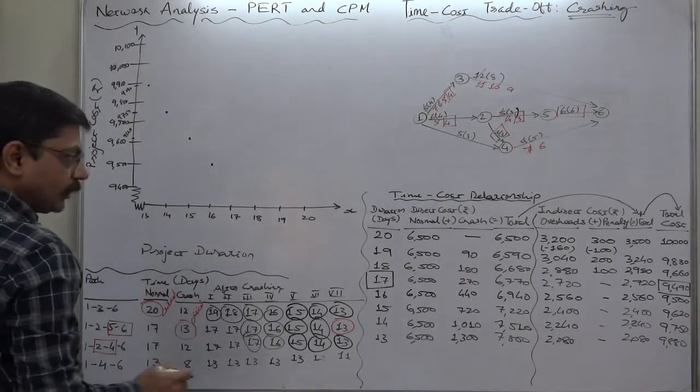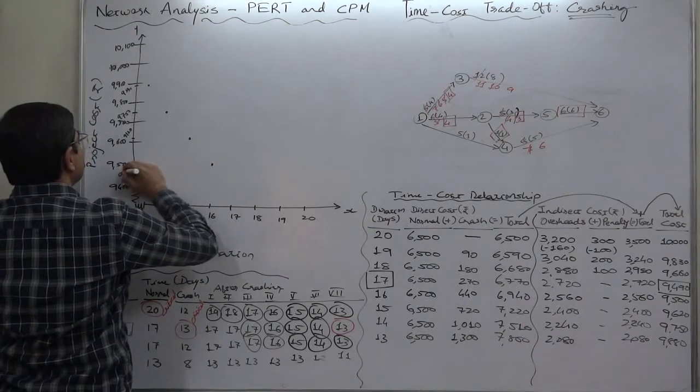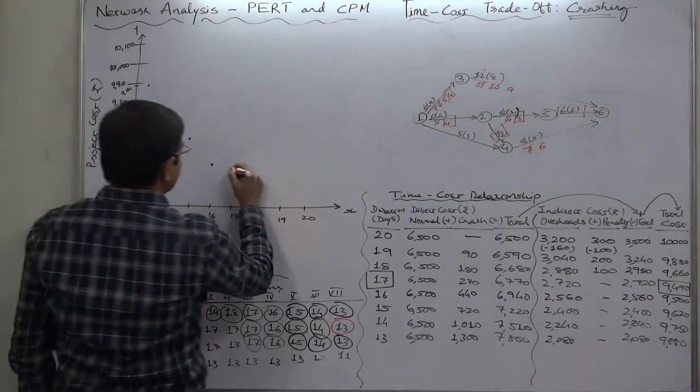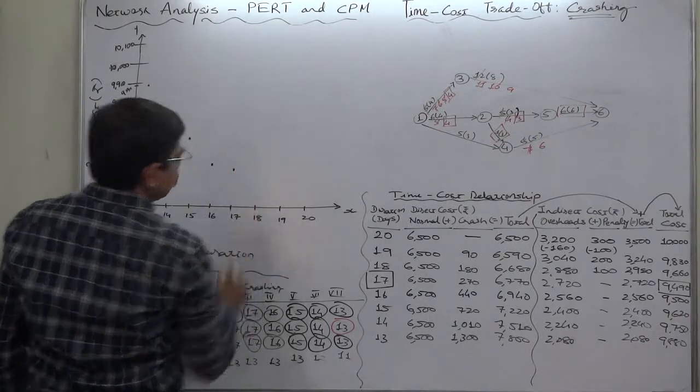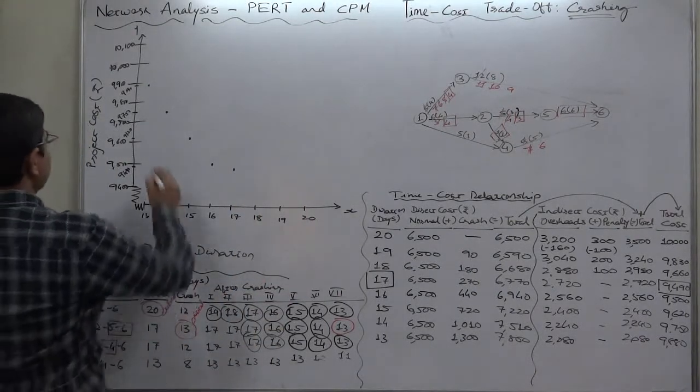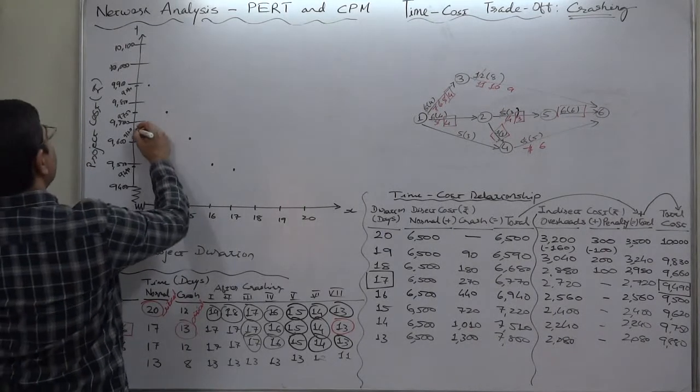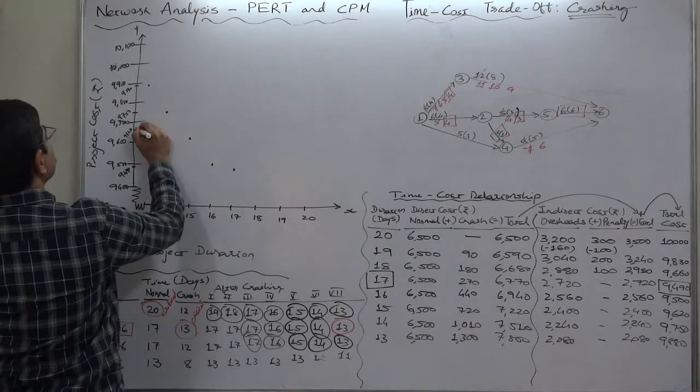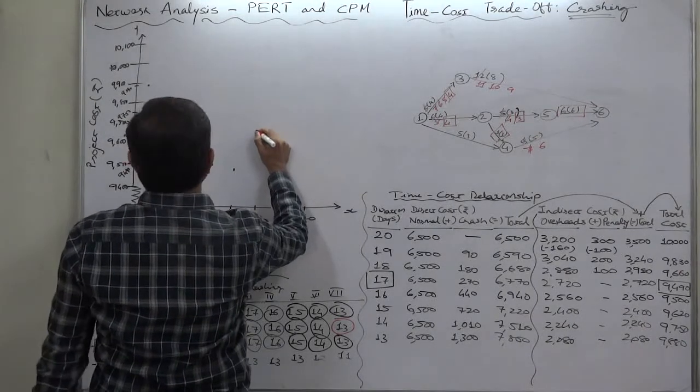In case of 17 it is 9,490. Now, in case of 18 it is 9,660.